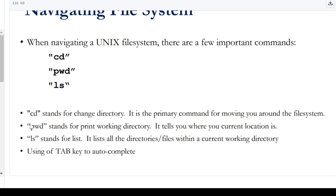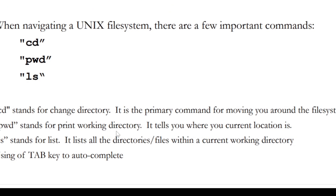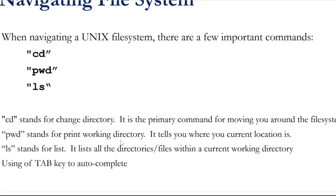Next, PWD — it stands for print working directory. It tells you where you are working and what your current location is. Next, LS — LS stands for list. It lists all files and directories in your current working directory. The files will appear in white color and the directories will appear in blue color, so you can see the difference.